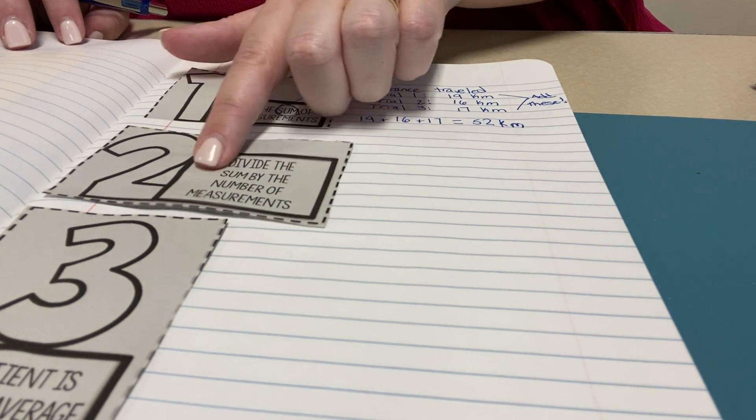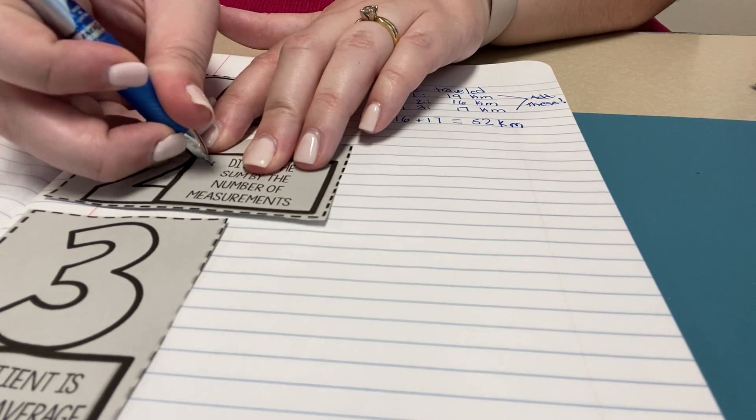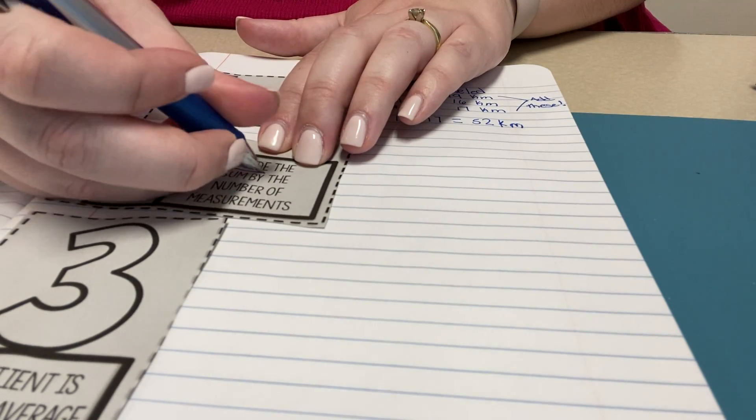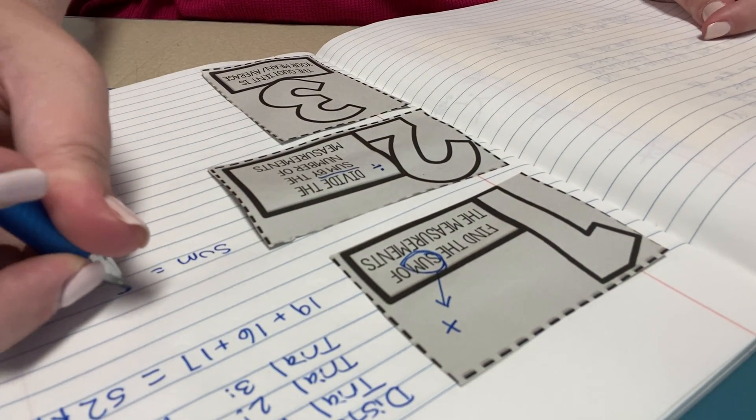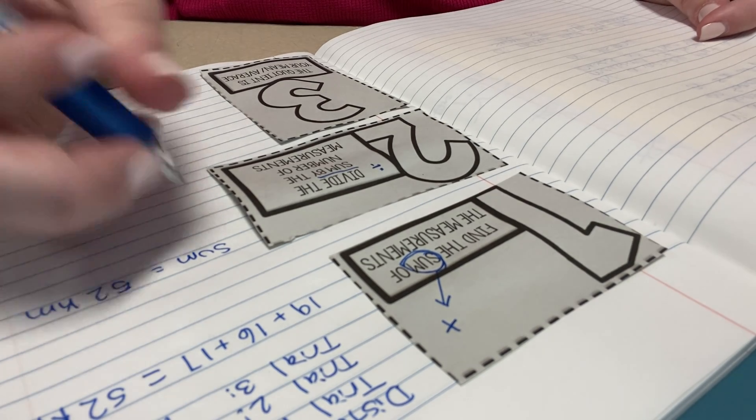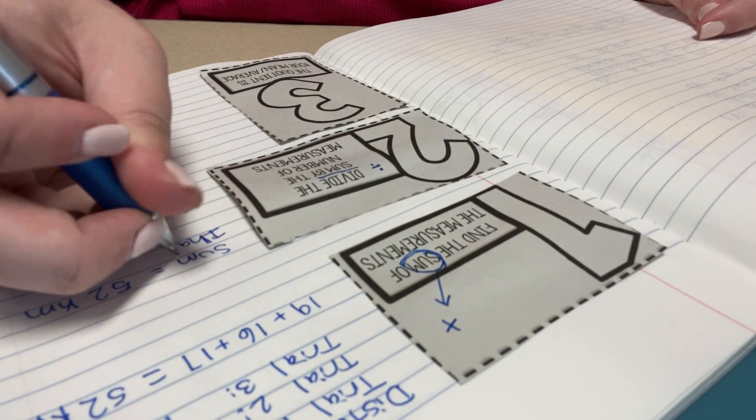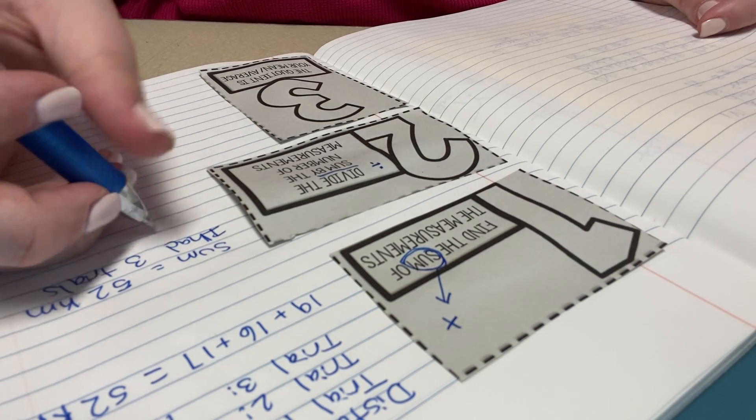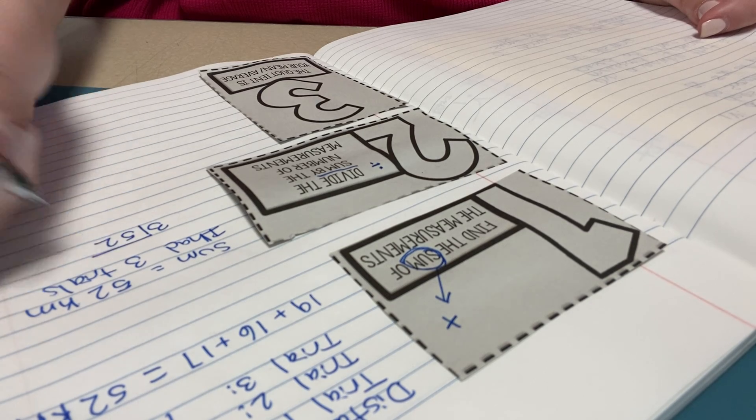Then we're going to divide the sum by the number of measurements. We can add our division symbol. So my sum from step one was 52 kilometers. I had three trials. So I'm going to do three on the outside and 52 on the inside.